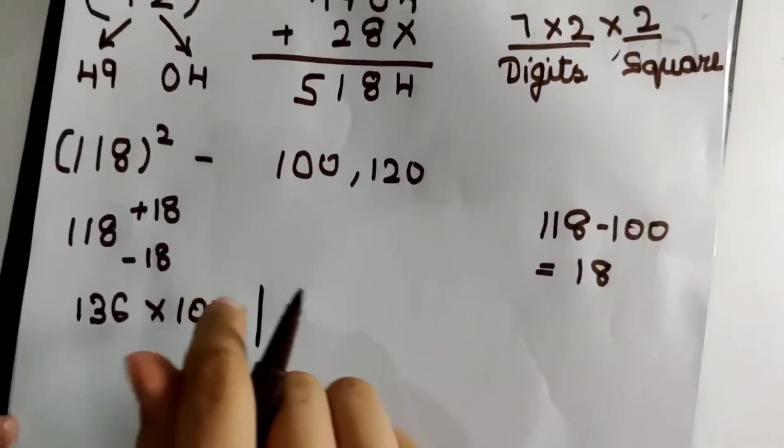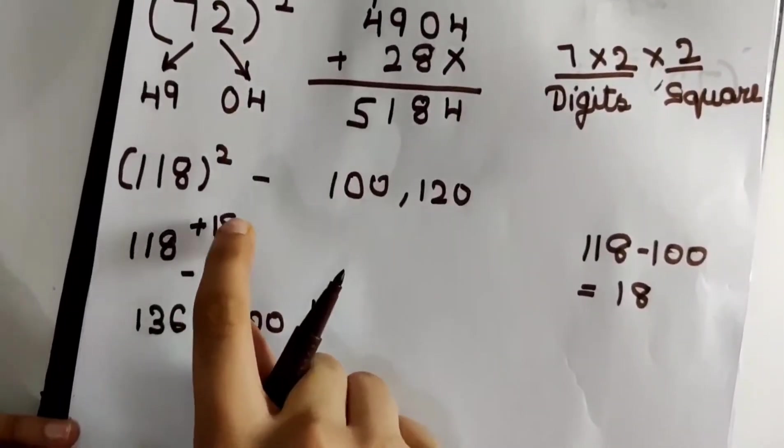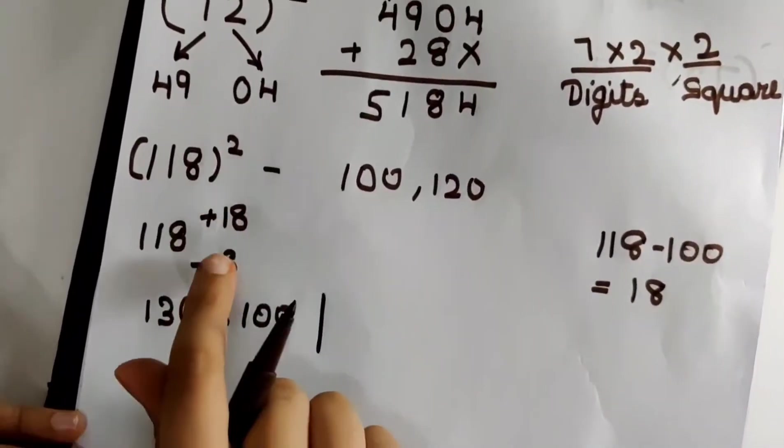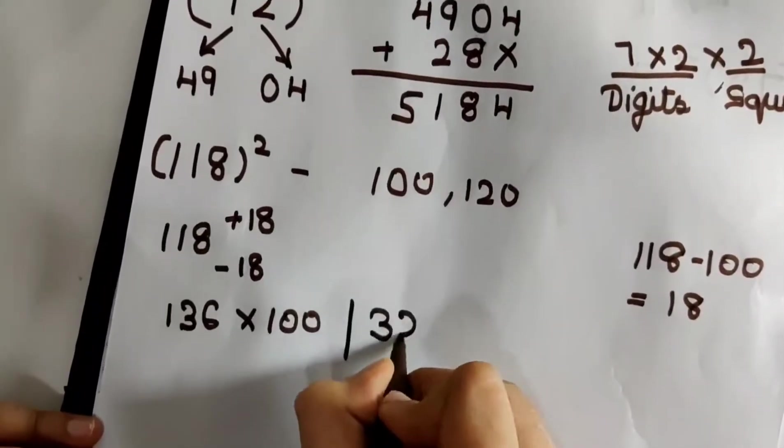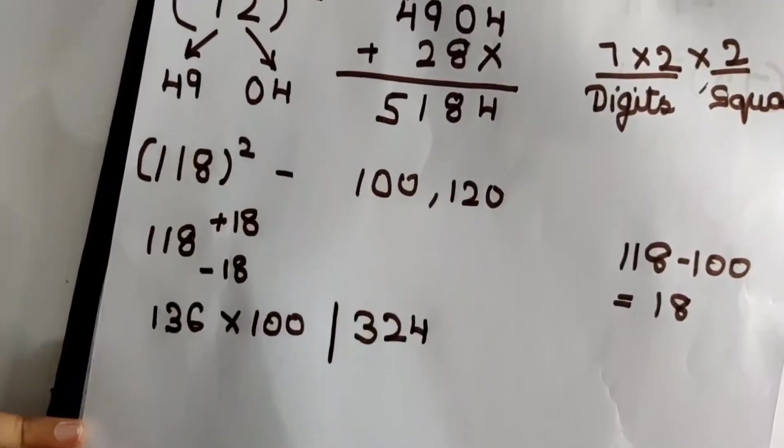Now what I have to write in the right hand side is the square of this number, that is the square of the difference. The difference is 18 and 18 square is 324. If you do not know the square of 18, you can use the above method to find it.